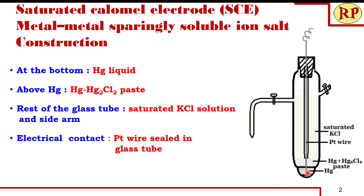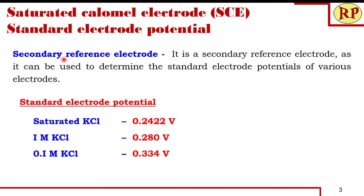For electrical contact, a platinum wire sealed in a glass tube is used, ensuring it is in contact with the mercury. Through the side tube, the main glass tube is filled with saturated KCl solution up to the tip of the side arm. The side arm itself can act as a salt bridge when coupling with another electrode — no separate salt bridge is needed. We call it a saturated calomel electrode specifically because saturated KCl solution is used; any other concentration means it is simply called a calomel electrode.